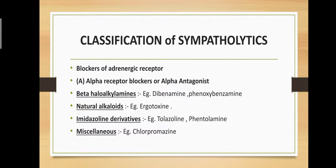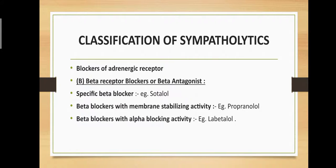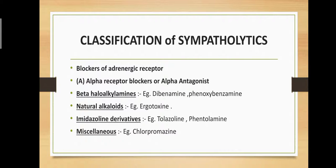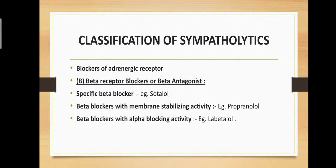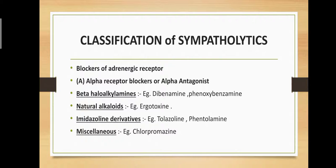Classification of sympatholytics: These drugs are mainly classified into two types — first, alpha receptor blockers or alpha antagonists, and second, beta receptor blockers or beta antagonists. Let's see them one by one.